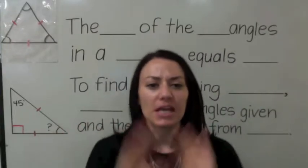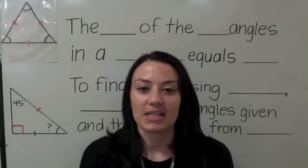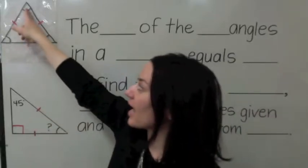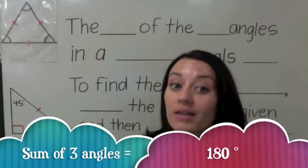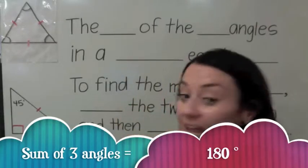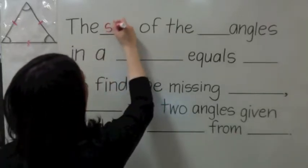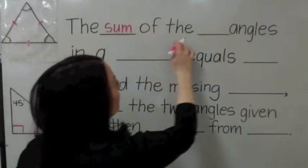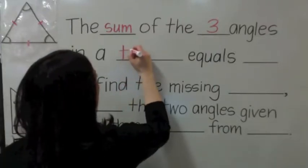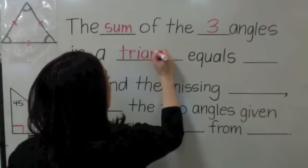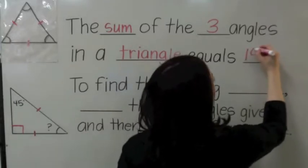The most important thing you need to take away from what you learned about triangles is that if you add up all of the angles in a triangle, it's going to be 180 degrees. So when we say add, another word for add is sum. The sum of the three angles in a triangle equals 180 degrees.